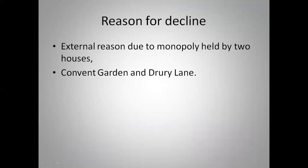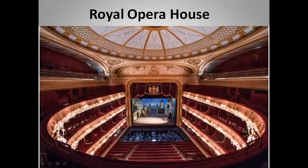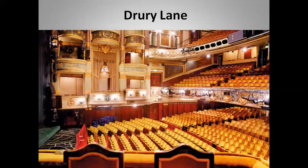Apart from that, there grew external reasons — that was due to the monopoly held by two houses. These two houses only started organising the drama: Covent Garden, wherein today we have the Royal Opera House, and Drury Lane. So these two houses started having performances of serious drama.